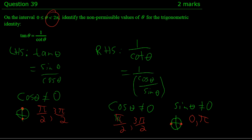So identify the non-permissible values. The smallest is 0. The next one is π/2. The next one after that is π. And finally, 3π/2. So that is our answer to this question.